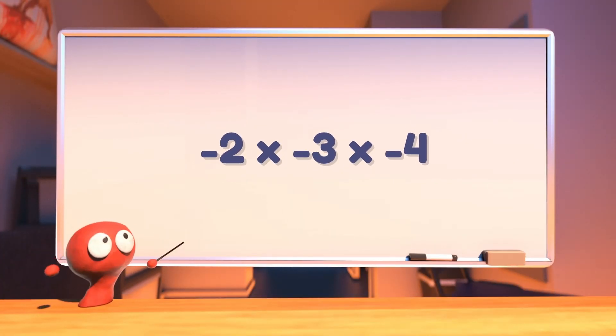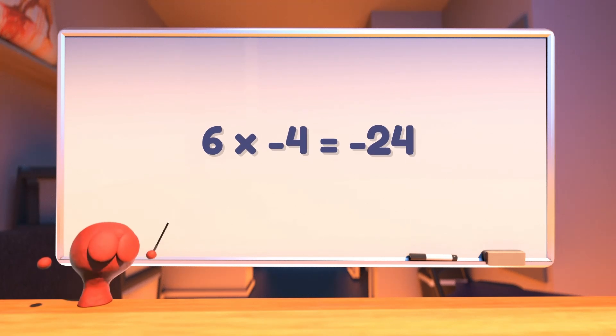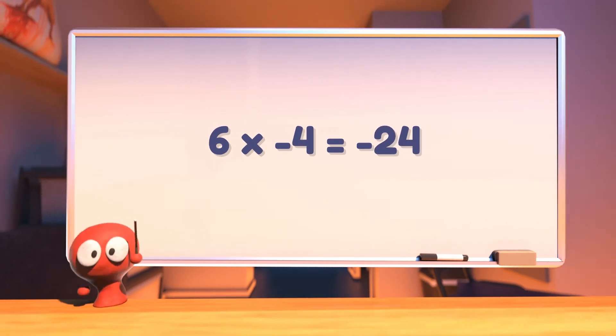Negative 3 times 2 will give us negative 6. To do this, we will first do negative 2 times negative 3, which will give us 6, and then multiply by 4 to get negative 24.